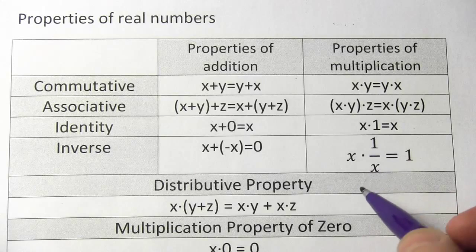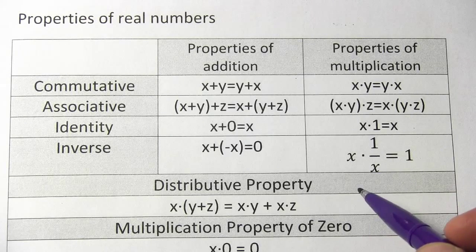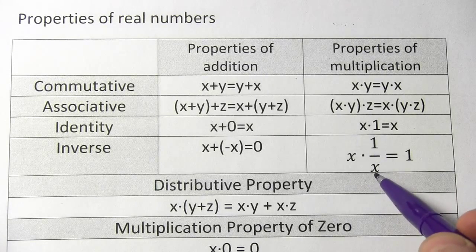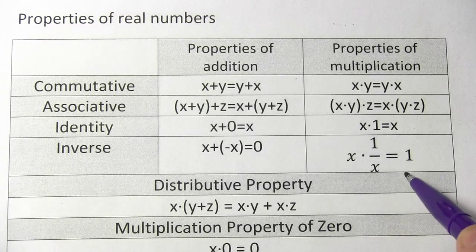In multiplication, it's a little bit different. The inverse of something in multiplication is one over that thing. So x times one over x, the inverse of x, is going to equal one.